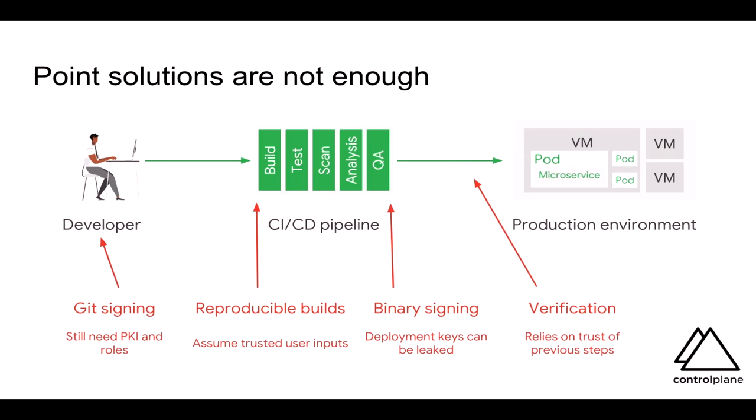Point solutions are not enough. TPM, Git signing, binary signing, network encryption, and reproducible builds are examples of point solutions. Signing needs PKI and roles. Reproducible builds assume trusted inputs. Binary signing still has key management problems. And an untrusted artifact deployed despite best efforts in the pipeline is again potential game over. So compliance is still a problem — how can we make sure that all actions were actually performed by the right party on the right artifacts and they also produced the right results?